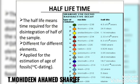Now we will learn about half-life. Half-life is the time taken by the nucleus to release alpha, beta, and gamma rays through alpha decay, beta decay, and gamma decay. Half-life means the time required for the disintegration of half of the sample.